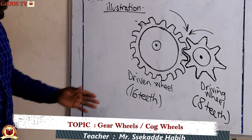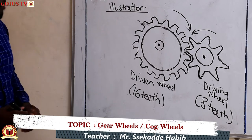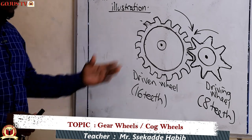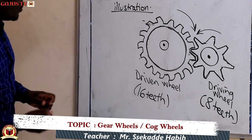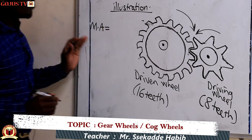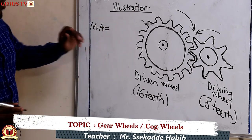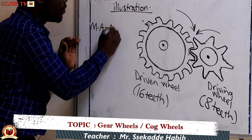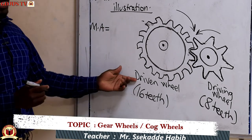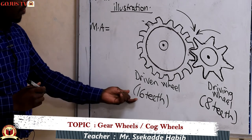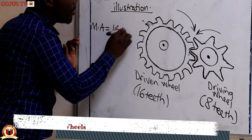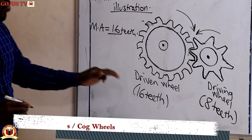Before we look at those examples, I want to draw your attention to finding the mechanical advantage of gear wheels. To find the mechanical advantage of a gear wheel, it will be equal to the number of the driven wheel teeth divided by the number of the driving wheel teeth. The driven wheel is the bigger wheel, so we write the number of teeth it has, which are 16.